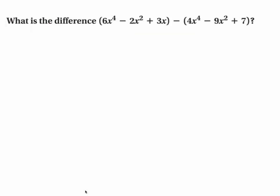When you have a difference, there are a couple of ways you can do this one as well. You can say 6x⁴ - 2x² + 3x, and you can go on and distribute that negative sign to make it a plus. So that's plus -4x⁴ + 9x² - 7. I always go back and check my signs are correct.